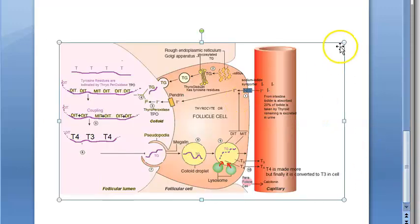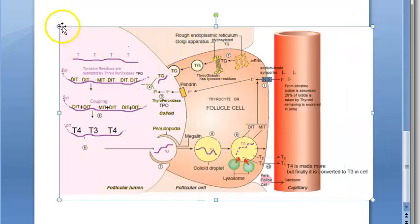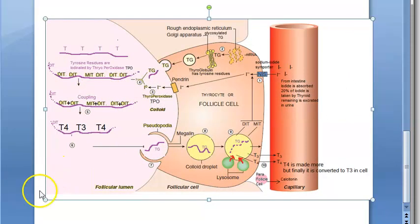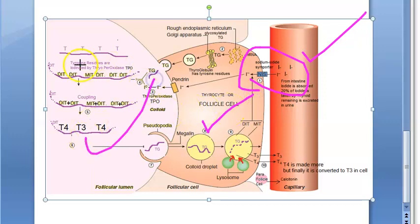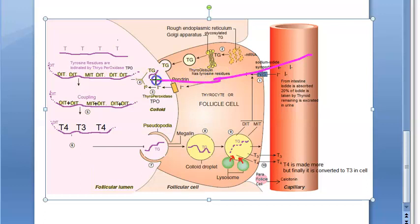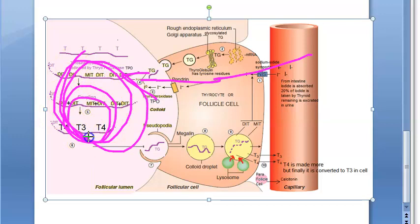Now let's look at the exact preparation and release of the thyroid hormone using this diagram. There are five steps. Here is the blood vessel, this is the thyroid follicular cell, and this is the colloidal space — the follicular lumen. Iodine is picked up from the blood vessel and put into the colloidal space where T3 and T4 are prepared, then released back to the blood.